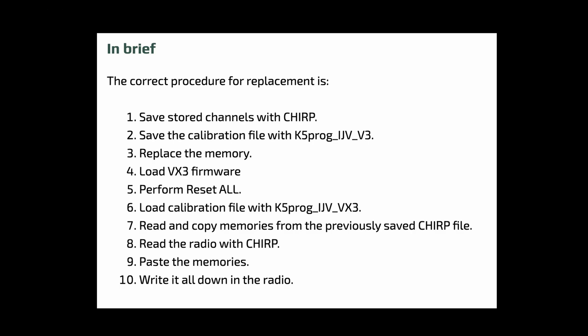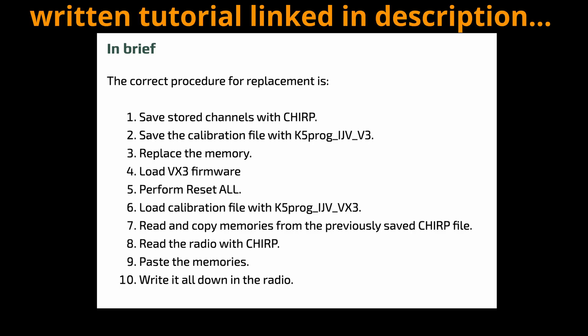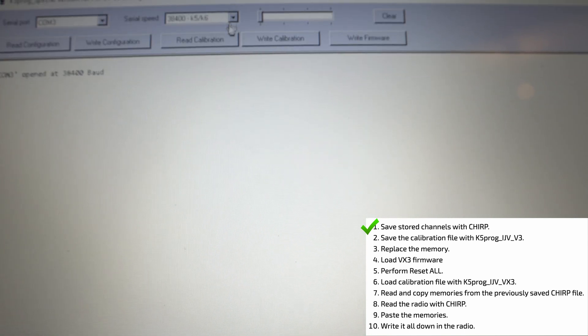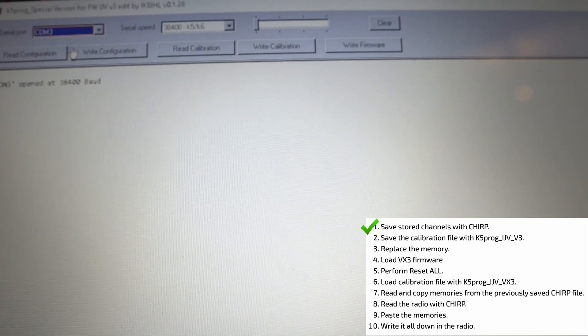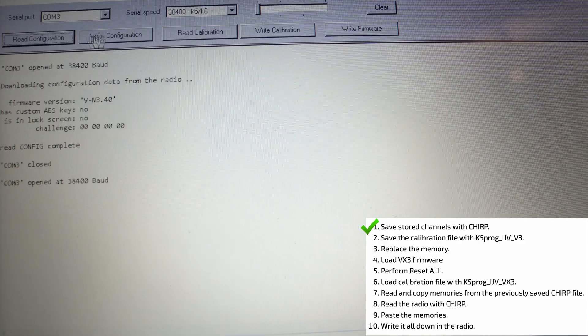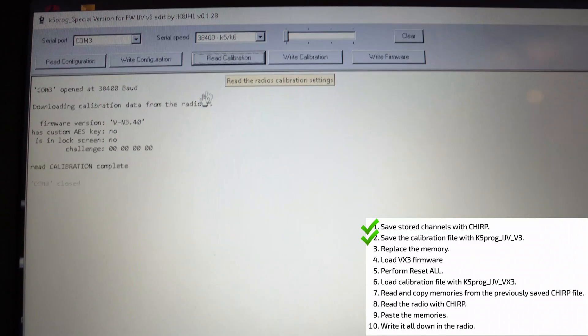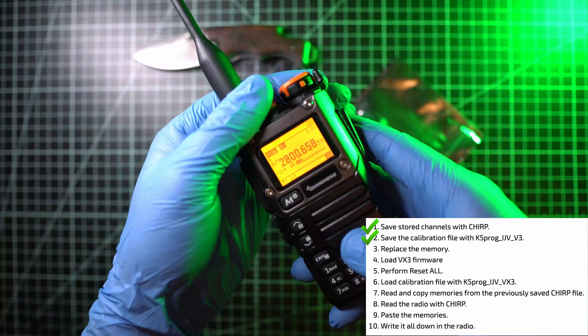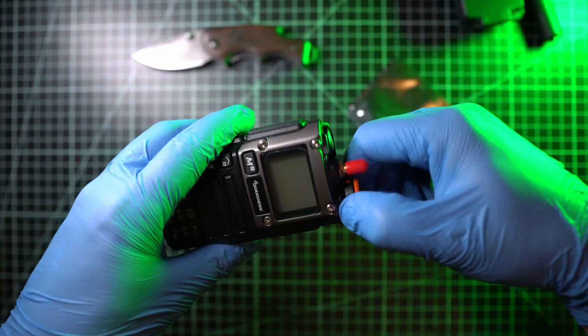Here are steps you have to do. I have already saved my channel with chip and now I am in IJV version 3 program. Yeah, it runs on Windows, so I have to visit my grandma in order to access one of these systems. Here you have to read calibration and save it. Now I can replace the memory, aka chip.